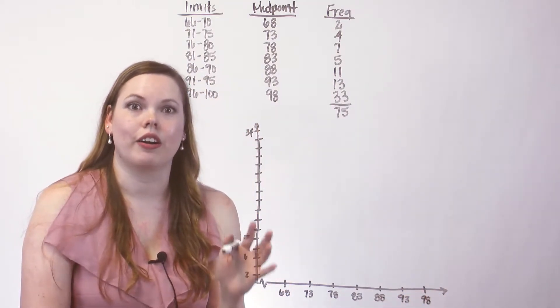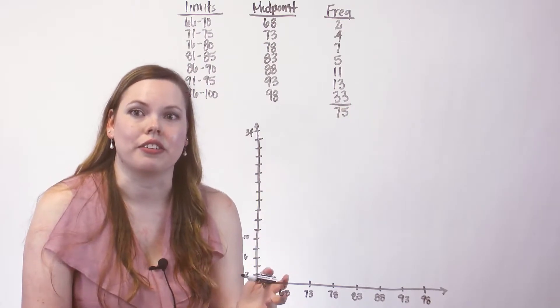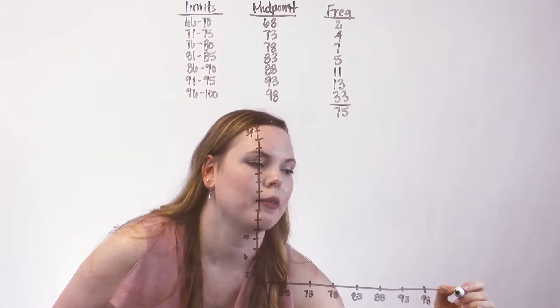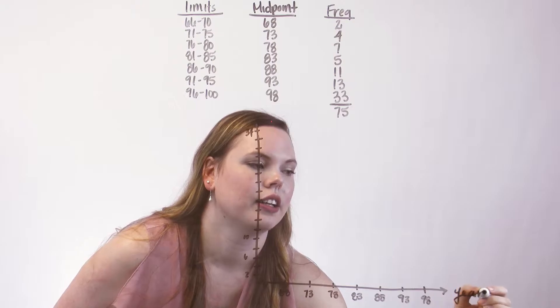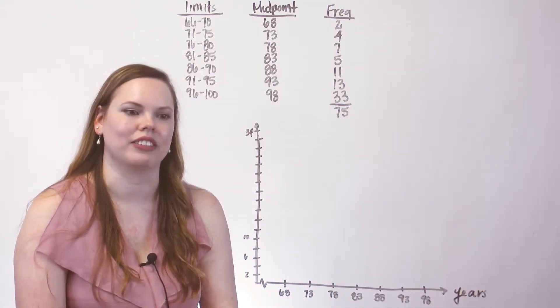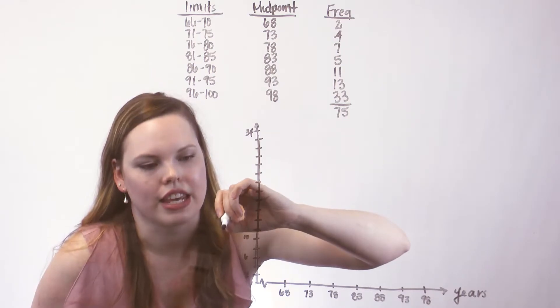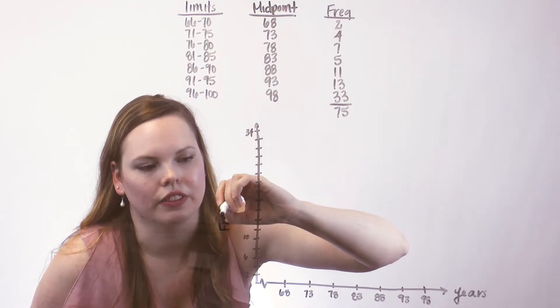And these are representative of the years of these pennies. So I'm going to label my horizontal axis with that, just so that I always have my graphs labeled. And the vertical is the frequency.